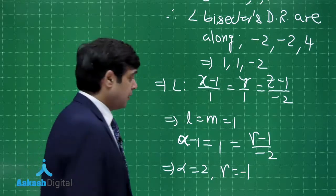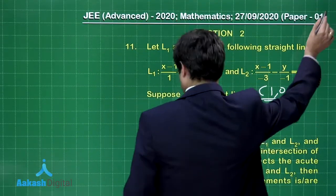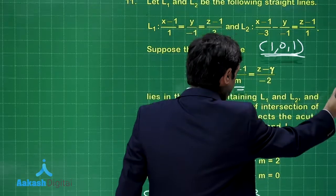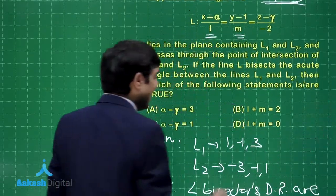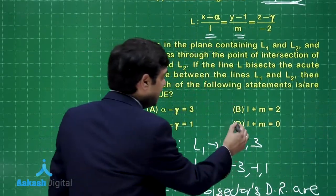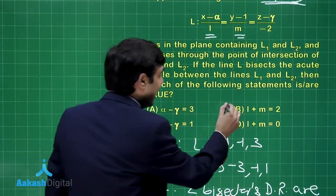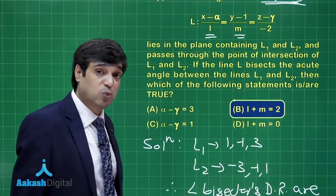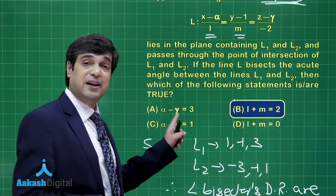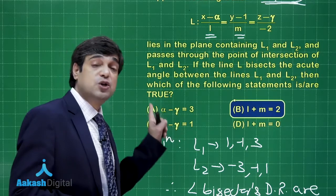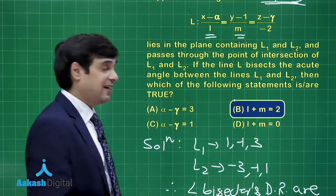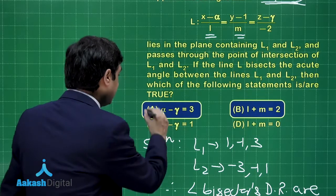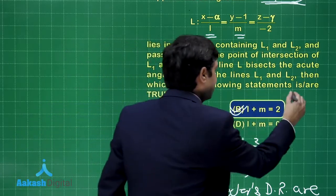From the options: l + m = 0 is not correct. l + m = 2 is perfectly correct since both l and m equal 1. And α − γ = 2 − (−1) = 3. Options a and b are correct.